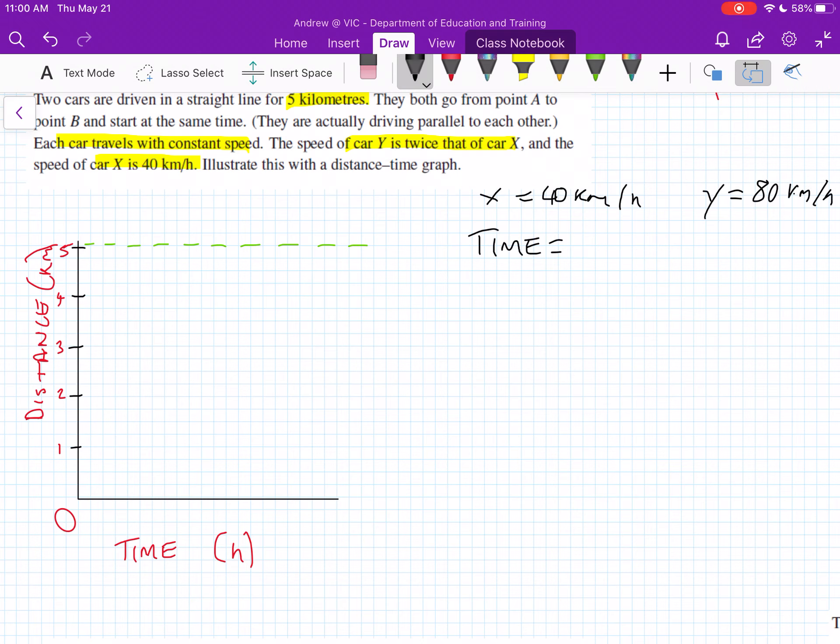So the time for this one, 5 km divided by 40 km per hour. Hopefully you'll realize this is 1/8th of an hour, and I'll just keep it as 1/8th of an hour. It doesn't say it needs to be in minutes or anything like that, so try not to overcomplicate your graph.